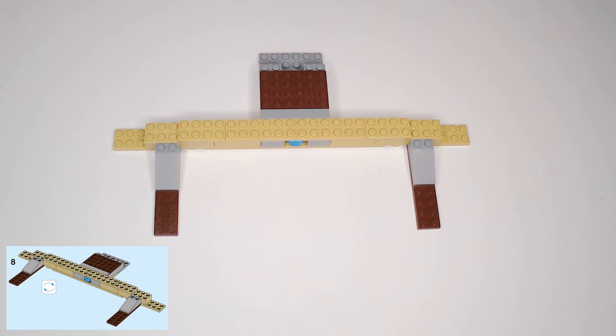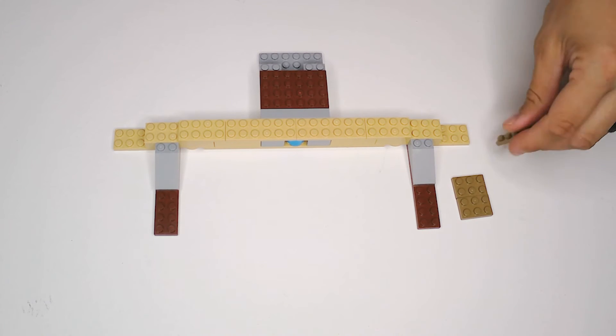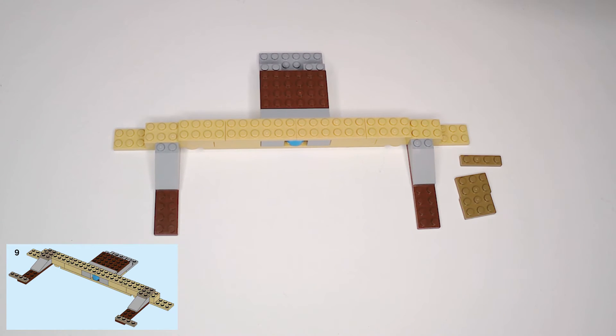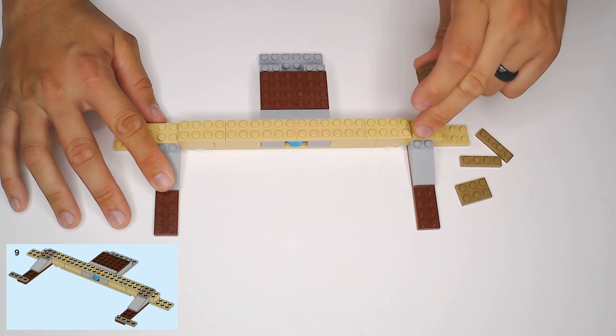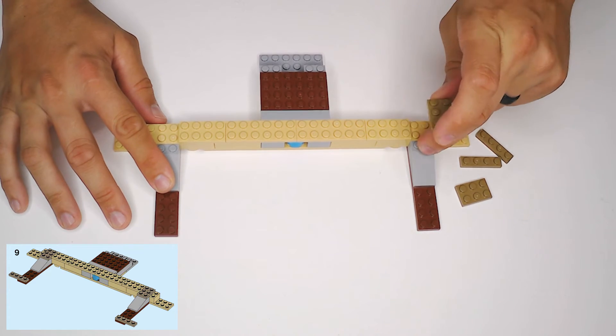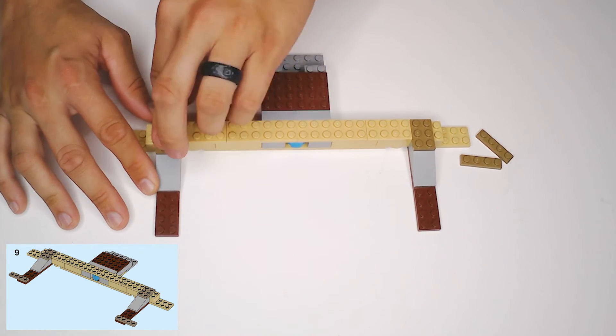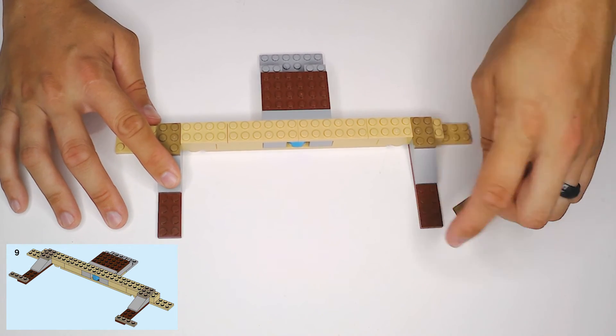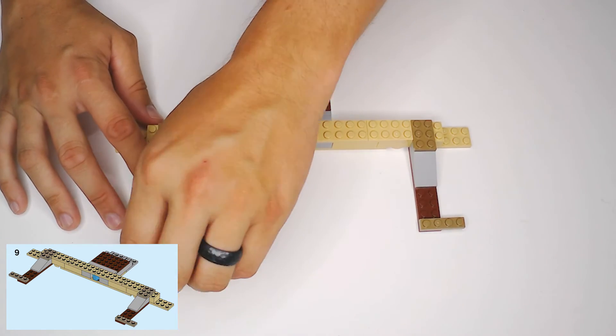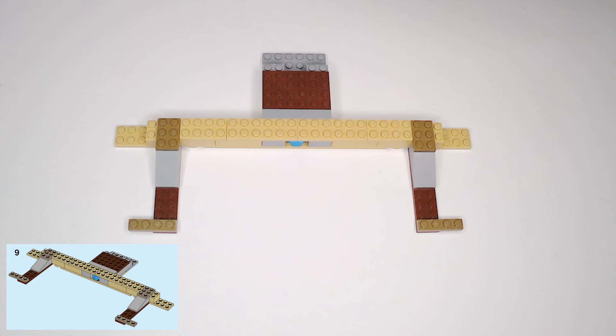Step nine, we're going to go with these dark tan pieces. We need two of the 2x3 plates and one of the 1x4 plates. Actually we should have two of the 1x4s. The 2x3s are going to go here on top of the tan block and the light gray slope, and then the 1x4s are going to go on the end of the brown plates, sticking out, hanging out over the edge, and each end flush with the bottom like that.